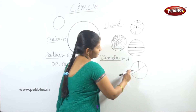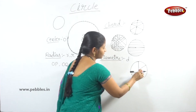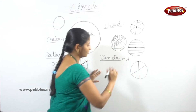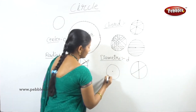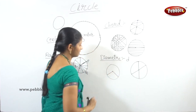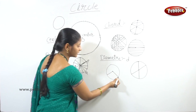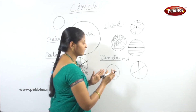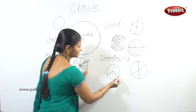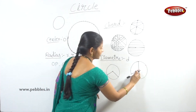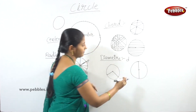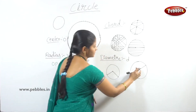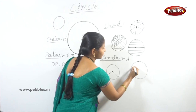The longest chord passing through the center is called the diameter. The diameter divides the circle into two equal parts.